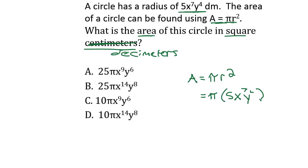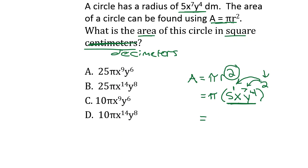We have 5x to the seventh y to the fourth inside the parentheses. Notice there is a squared outside the parentheses. Our exponent rules tell us that when we have an exponent outside the parentheses, it multiplies by all of the exponents inside. So we have 5 to the first, x to the seventh, and y to the fourth, and the 2 multiplies all of those exponents.